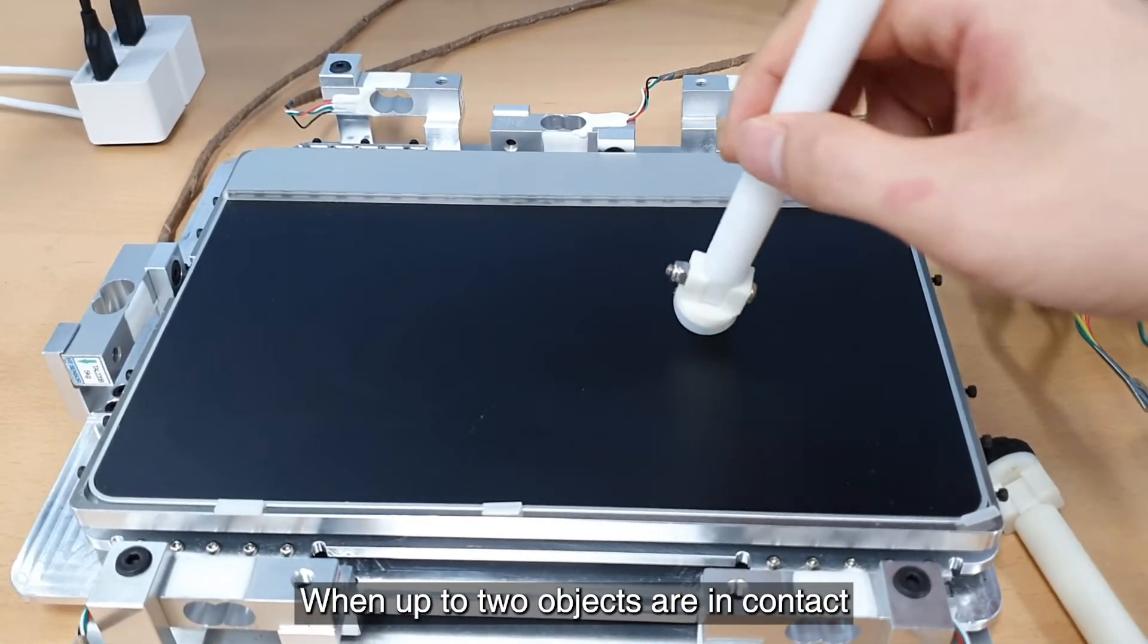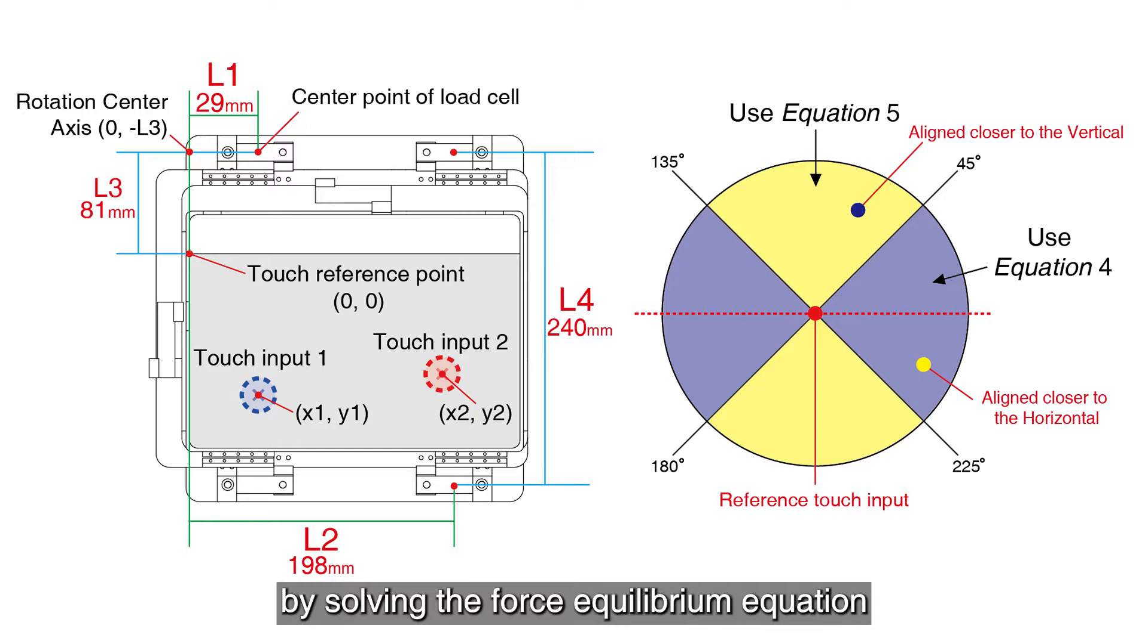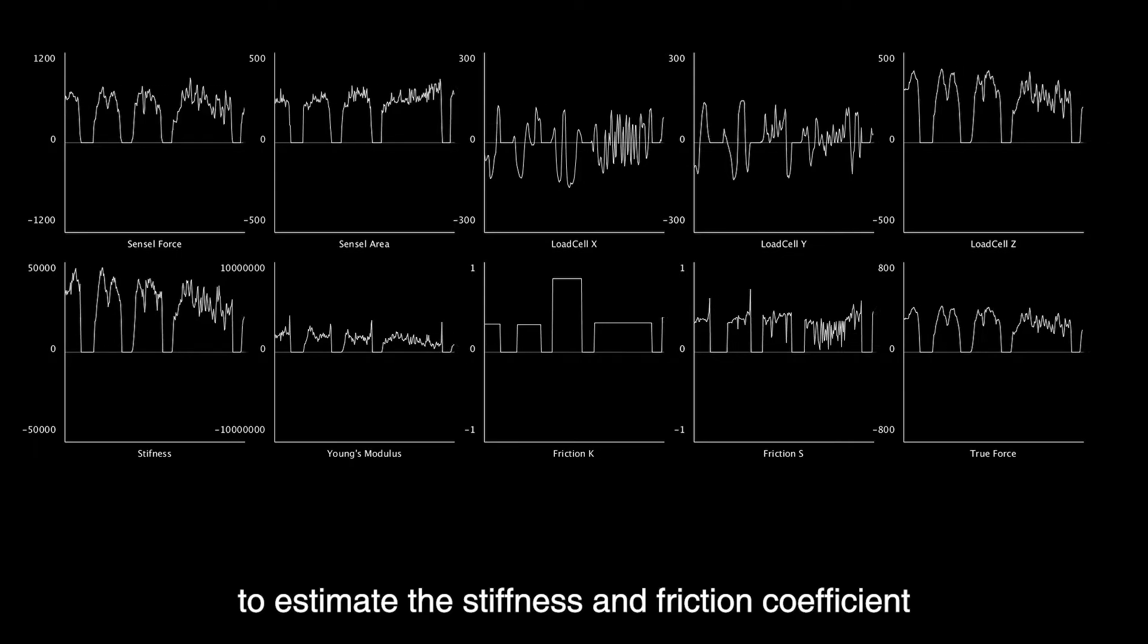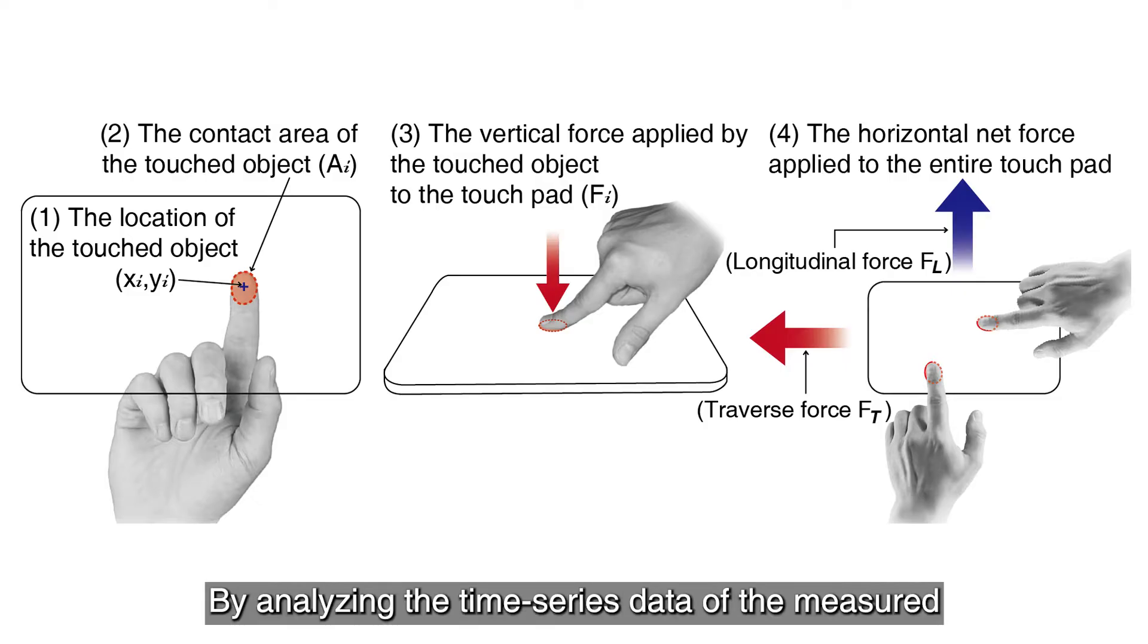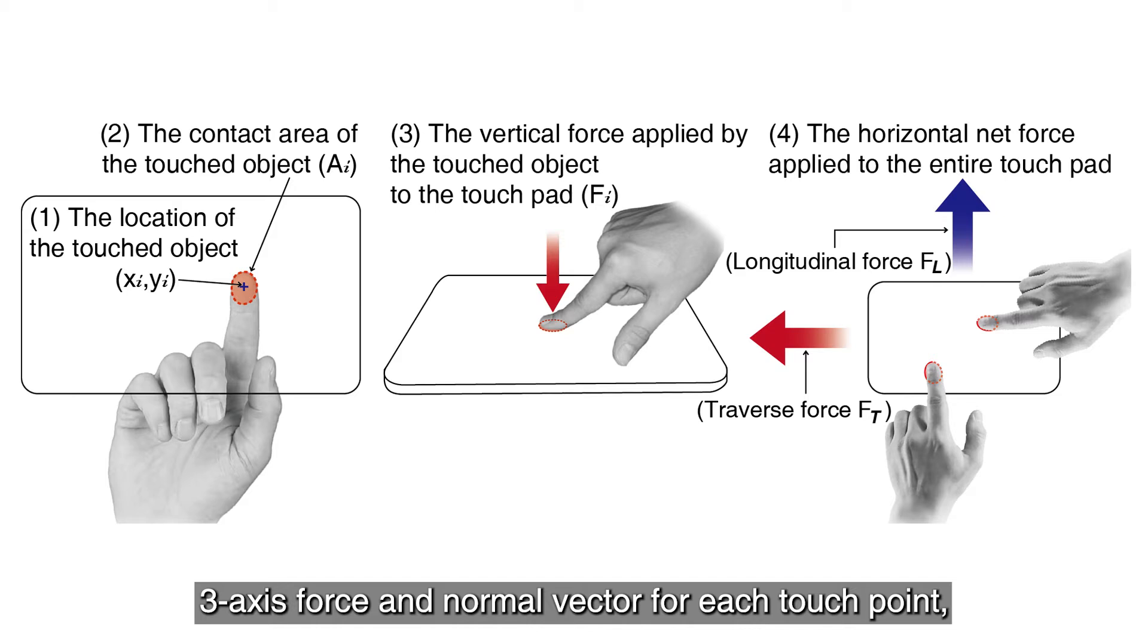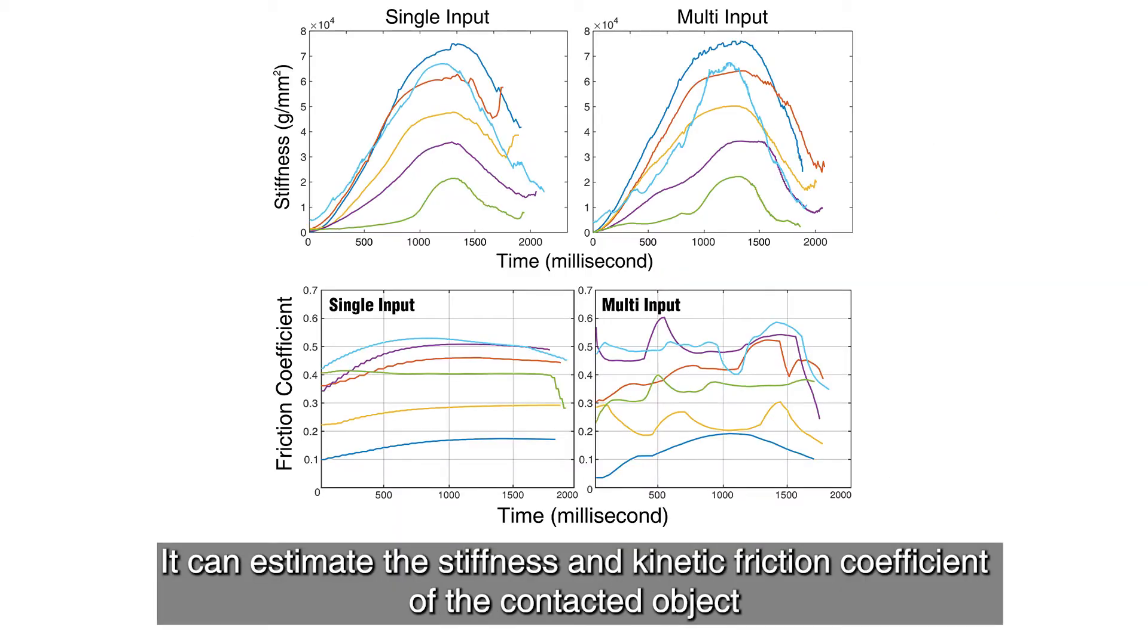When up to two objects are in contact, it solves the force equilibrium equation to estimate the stiffness and friction coefficient of each contacted object. By analyzing the time series data of the measured three-axis force and normal vector for each touch point, it can estimate the stiffness and kinetic friction coefficient of the contacted object.